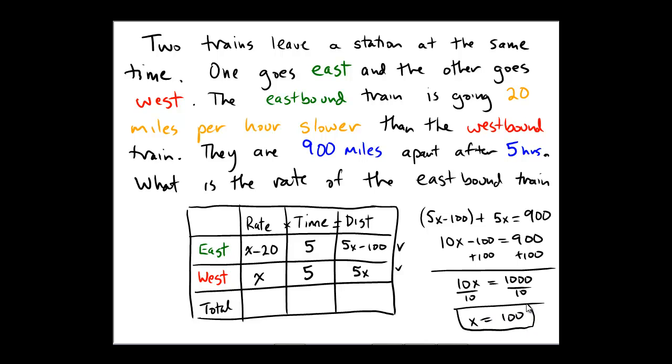Now, before you answer too quickly on a test, we just found that x equals 100. Remember that x represented the speed of the westbound train. That's 100. However, this problem is asking for the eastbound train.